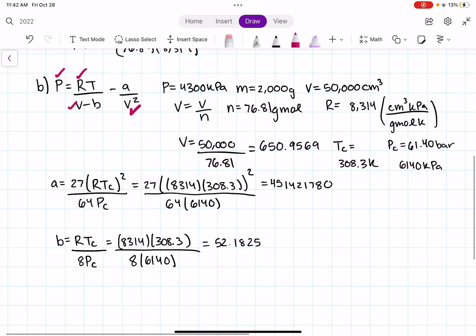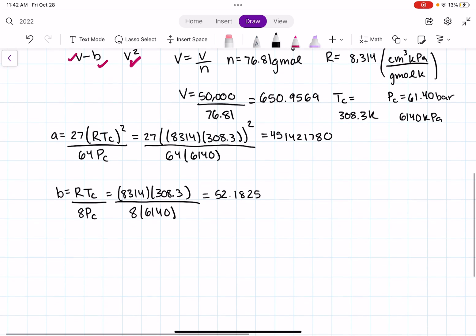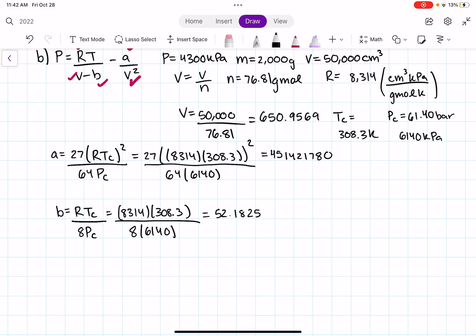Now we have A and B. So let's go ahead and start plugging things in to our formula. So our formula is going to be our pressure by kilopascals. So 4300 equals my R value times our temperature, which we're going to look for, divided by our molar volume, which was 650.9569, minus our B, which is 52.1825, minus our A, which is 451421780, divided by your molar volume squared. So 650.9569 squared.